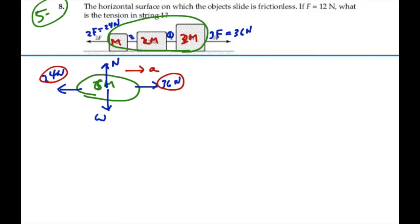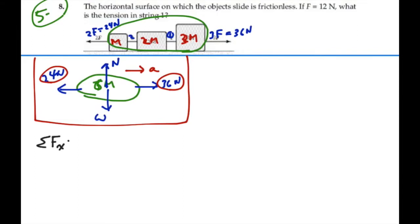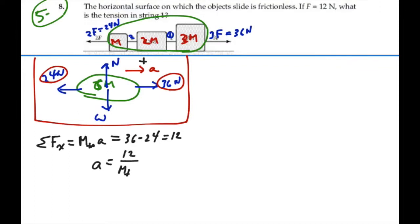Setting up Newton's second law based on this free body diagram, the summation of forces in the x-direction equals total mass times acceleration. The net force in the direction of acceleration is 36 minus 24, or 12 newtons. So the acceleration equals 12 divided by the total mass, which is 12 over 6m, giving us 2 divided by m.